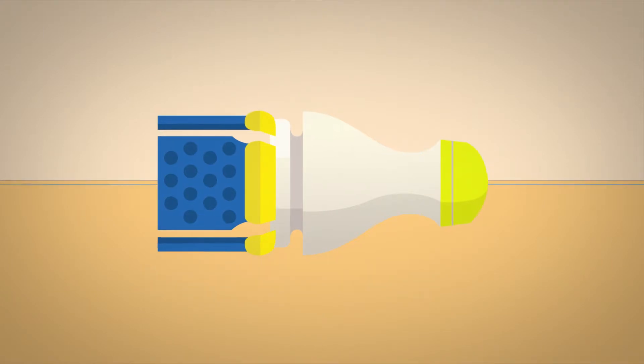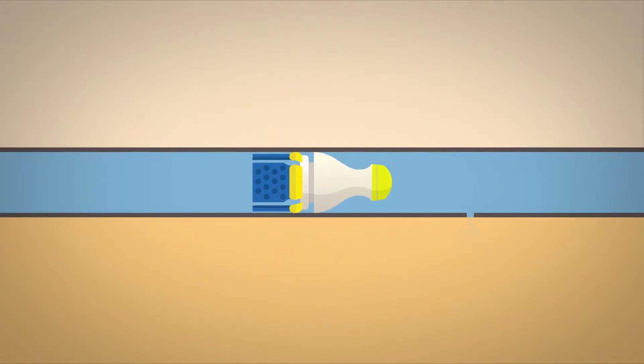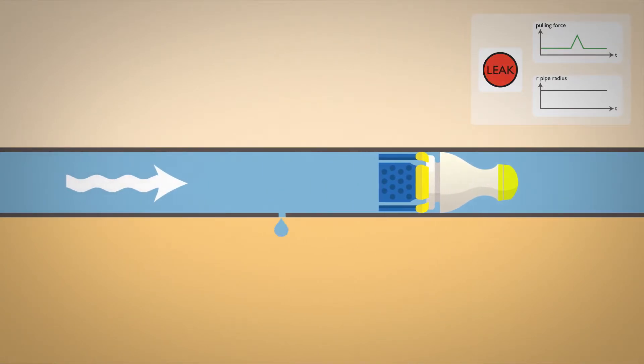So how does this robot find leaks? At a leak, water is escaping from the pipe and creates a suction force. When the robot passes a leak, the blue membrane sensor will feel the suction force and get stretched. The robot senses this stretch and indicates a leak.